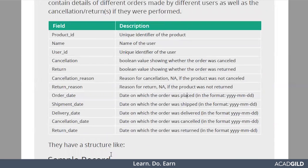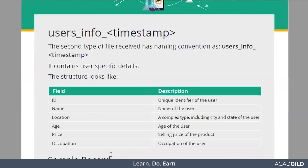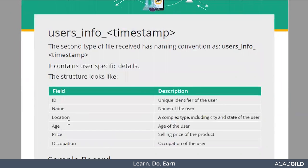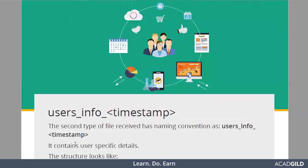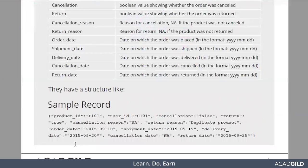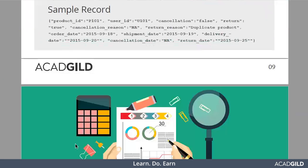There is one more data type — user info. Every unique user will have specific details like user ID, name of the user, location, age, and occupation. And if they bought some product, what is the price of the product they bought. This is how that data looks like.